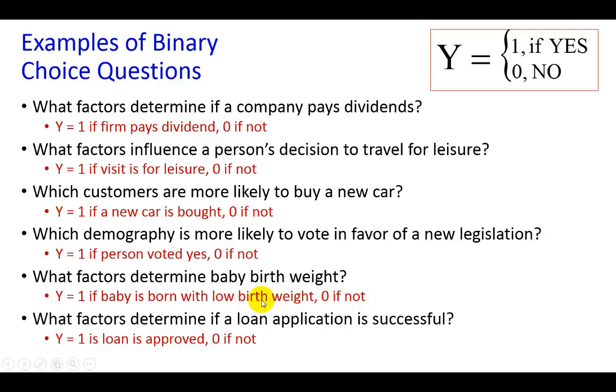And of course, in each of these cases, you'd have to specify the explanatory variables. As in the case of baby birth weight, explanatory variables may include the genetic background of the mother and child, age of the mother, nutrition, prenatal care, and smoking, stuff like that. And as in the case of this lead example, what factors determine if a loan application is successful? And again, Y would take on the value of 1 if loan application is approved, 0 if not. And of course, you can flip it the other way. You can choose that Y would be 1 if loan application is denied, 0 if it is approved. In which case, your interpretation of the sign of the coefficients would be the other way around as well.